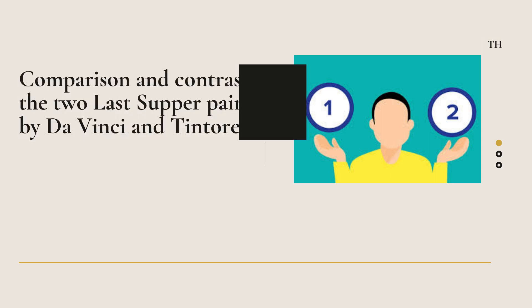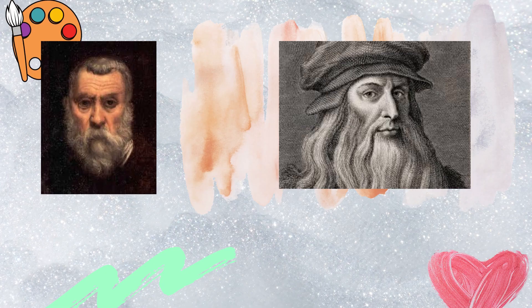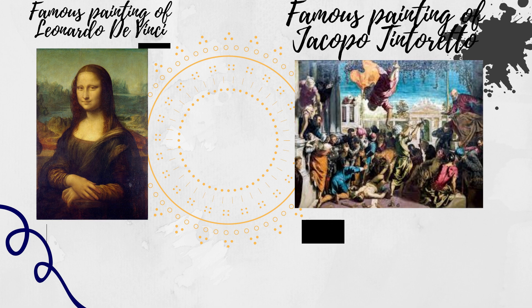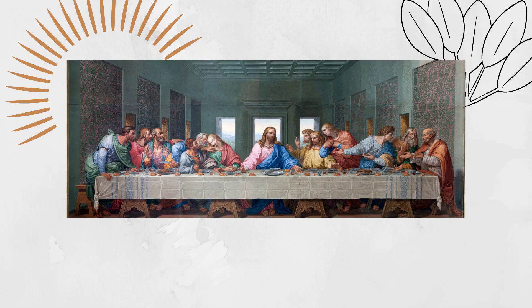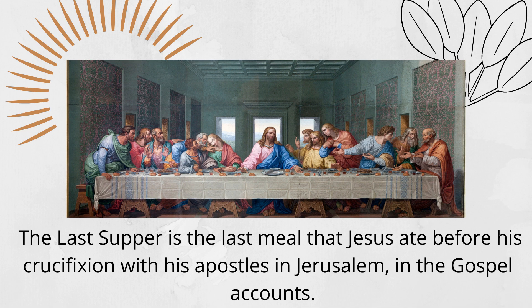Good day everyone! We are the group that would represent the artwork of two artists which is The Last Supper. These two artists are Leonardo da Vinci and Jacopo Tintoretto. One of da Vinci's famous artwork is Mona Lisa, while Tintoretto's famous artwork is The Miracle of the Slave. So both of them made a Last Supper painting, and we will see what are the differences that can be seen in their artworks.